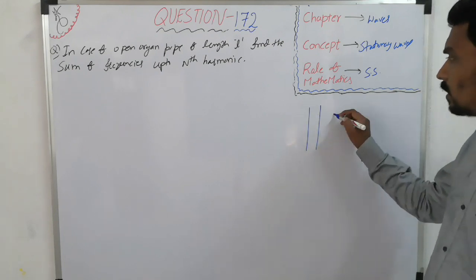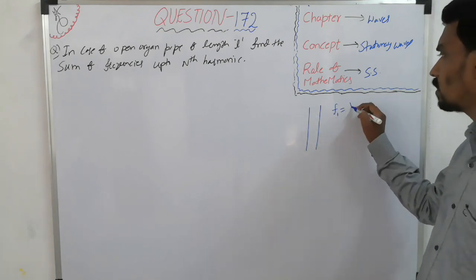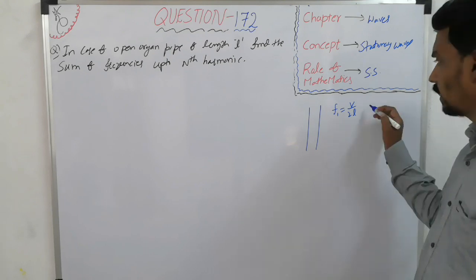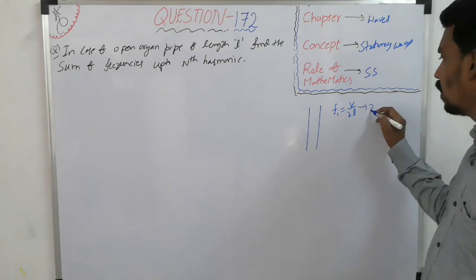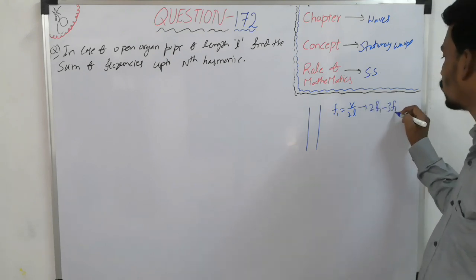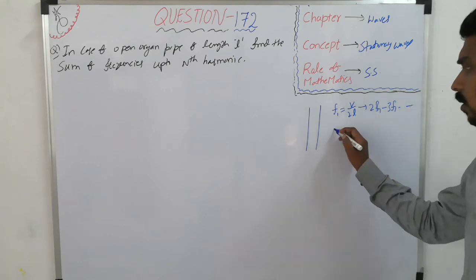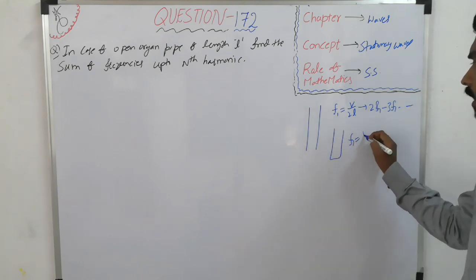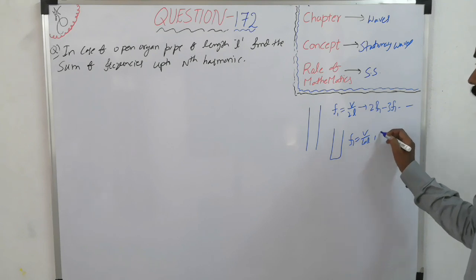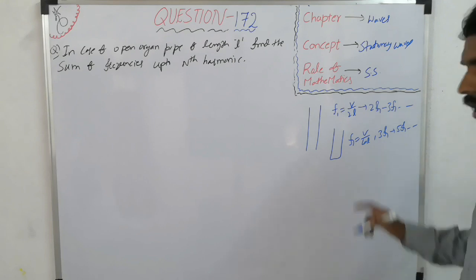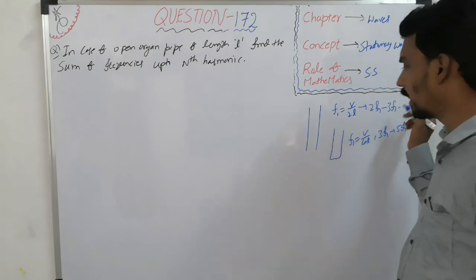In case of open pipe, the fundamental frequency is V by 2L, and the consequent frequencies are 2 times, 3 times, and so on. In case of closed organ pipe, the fundamental frequency is V by 4L, and the next are 3, 5, and so on—odd integral multiples. Here, integral multiples.